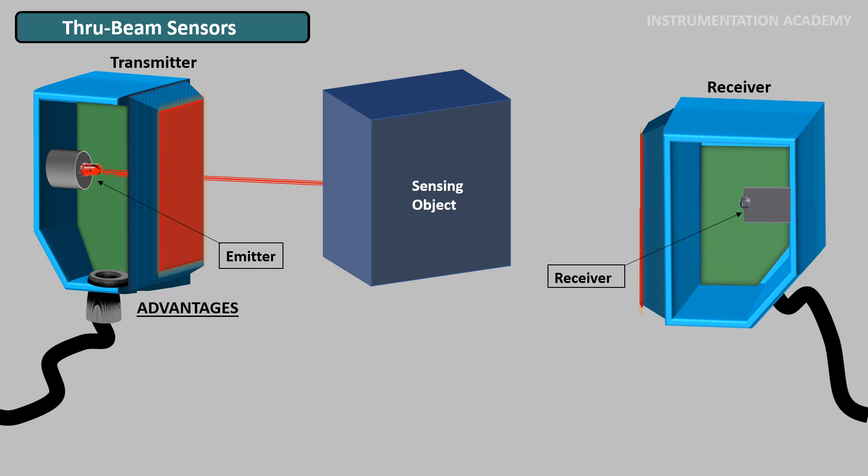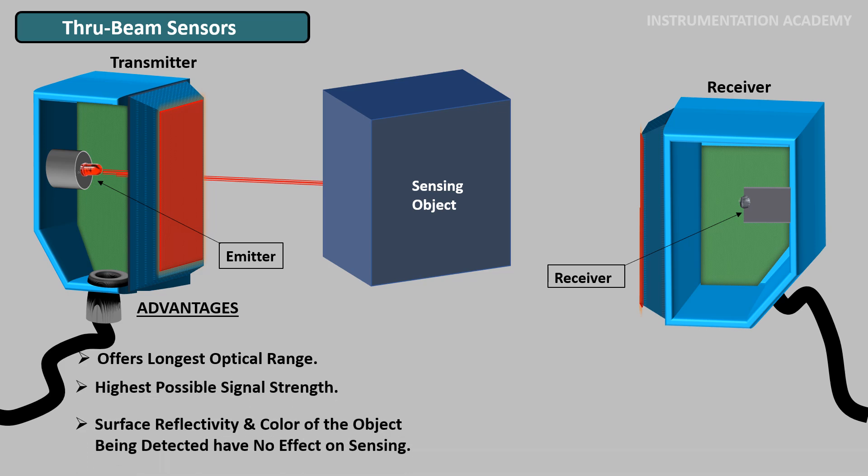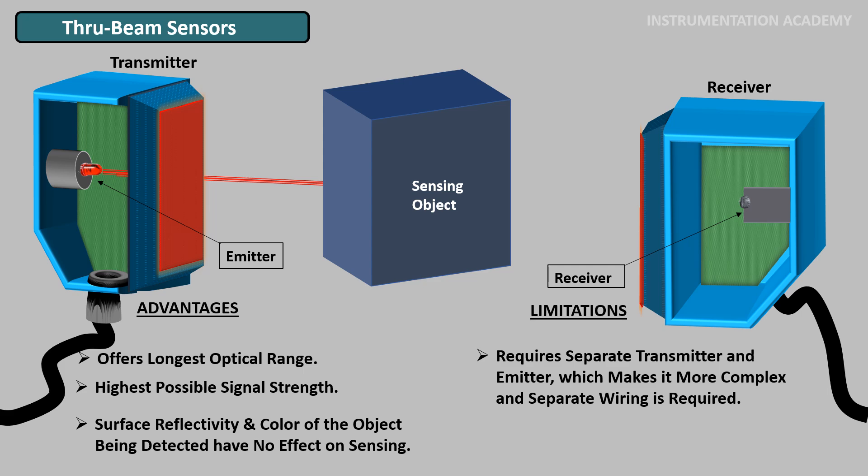Advantages of through beam sensors: As the light from the transmitter falls directly on the receiver, through beam sensors offer the longest optical range and highest possible signal strength. Surface reflectivity and color of the object being detected have no effect on sensing. Limitations: This type of setup requires separate emitter and a separate detector which makes it a bit more complex to install and wire. Alignment of emitter and receiver can be difficult.